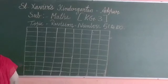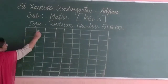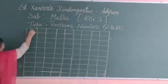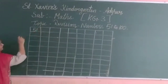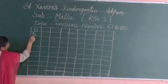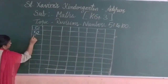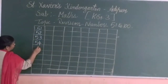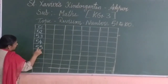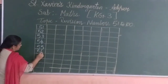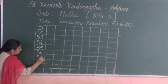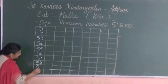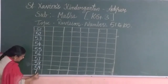Now look at the board, all of you. What number will come after 50? Yes, 51. 52, 53, 54, 55, 56, 57, 58, 59, 60.